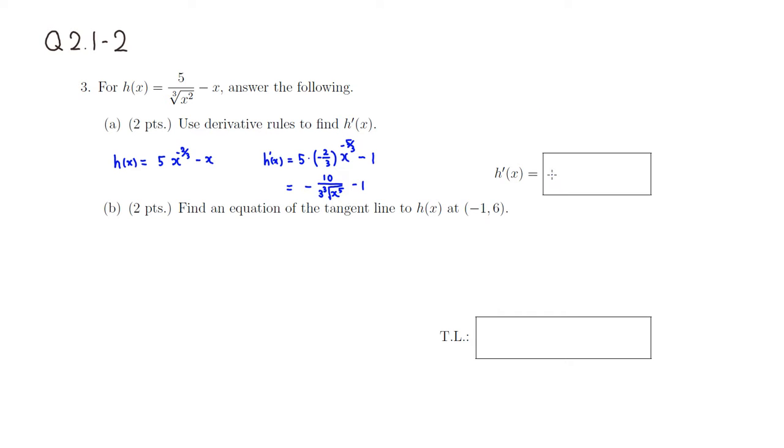So we have a negative 10 over 3 times a cube root of x to the fifth minus 1.